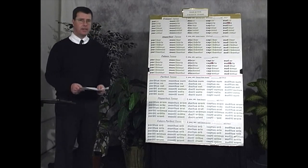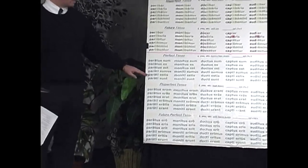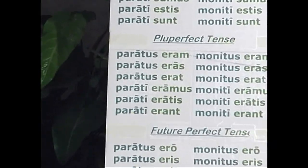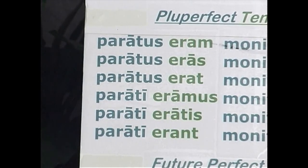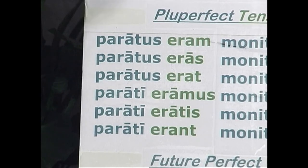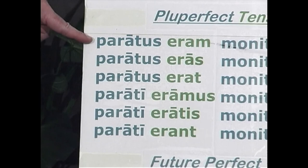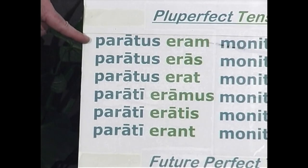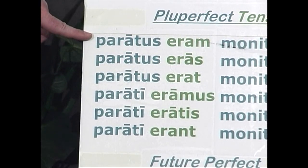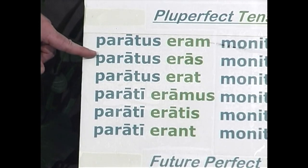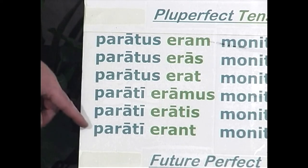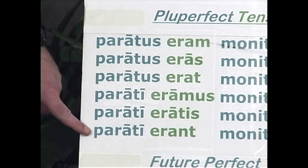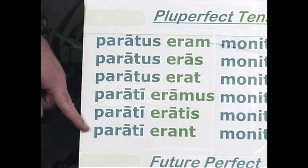The pluperfect passive indicative is formed very similarly to the perfect passive indicative, but this time instead of the present conjugation of sum, you add the imperfect of sum. Remember from our first session: eram, eras, erat, eramus, eratis, erant. When that is combined with the fourth principal part, you have the pluperfect passive indicative. Translation: I had been prepared, you had been prepared, he had been prepared. And parrati erant translates as: they had been prepared.